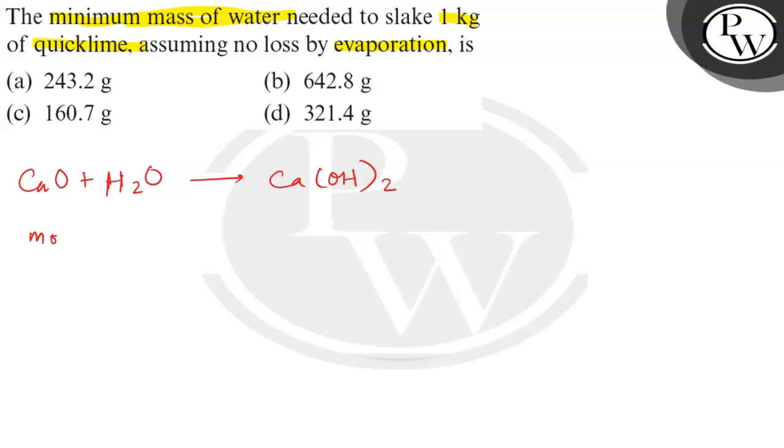Moles of CaO will be how much? Moles of CaO will be equal to 1000 divided by 56, and that will be 17.85 moles.